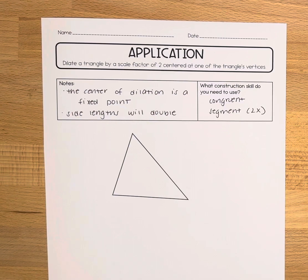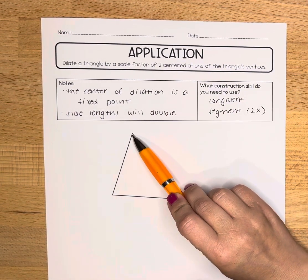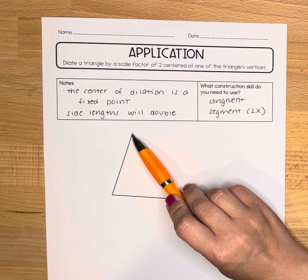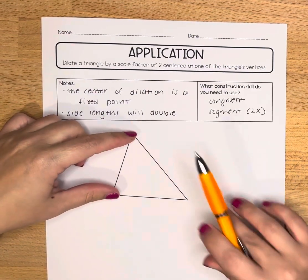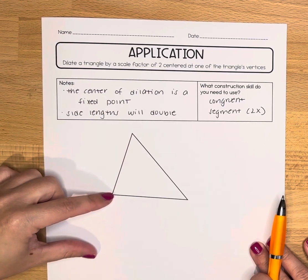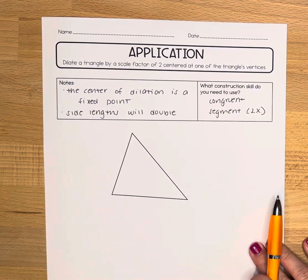So for my sample problem here I'm going to choose to use this point at the top as the center of dilation and that means this side length is going to double and then this side length is going to double.